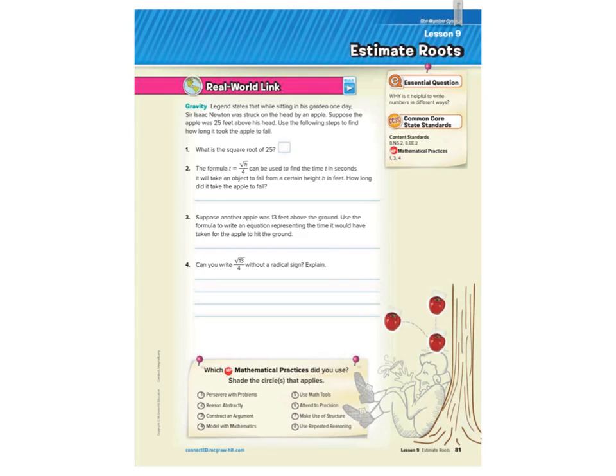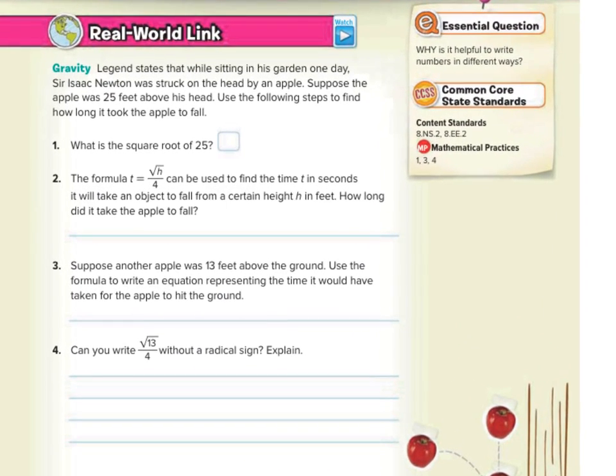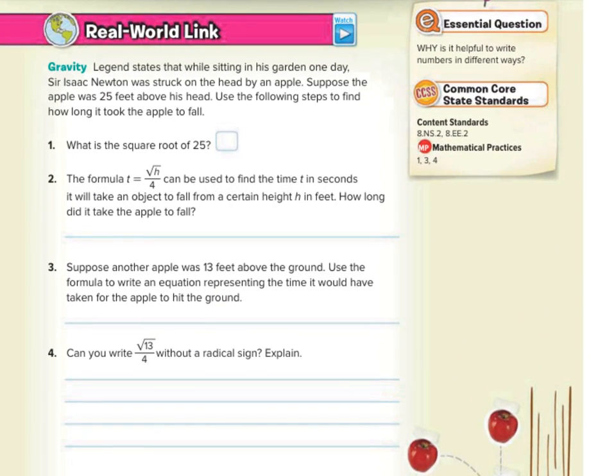Hi, Mr. Richards here. Today's lesson is on Estimate Roots. As we zoom in to our real-world link, legend states that while sitting in his garden one day, Sir Isaac Newton was struck on the head by an apple. Suppose the apple was 25 feet above his head. Use the following steps to find how long it took the apple to fall.